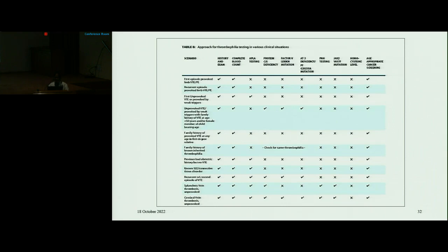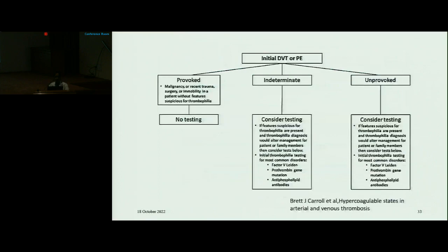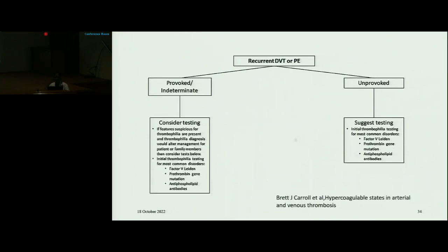Inherited thrombophilia testing should only be done in unprovoked VTE, or provoked by weak triggers with a strong family history of VTE, or in recurrent cases of venous thromboembolism. Age-appropriate cancer screening is mandatory for all cases, but serum homocysteine level is not recommended routinely. In summary, for initial DVT or PE: if it is provoked, there is no indication for thrombophilia testing; if unprovoked, we can consider testing. For recurrent DVT or PE, if provoked we do not need thrombophilia workup, but in unprovoked recurrent DVT we do.